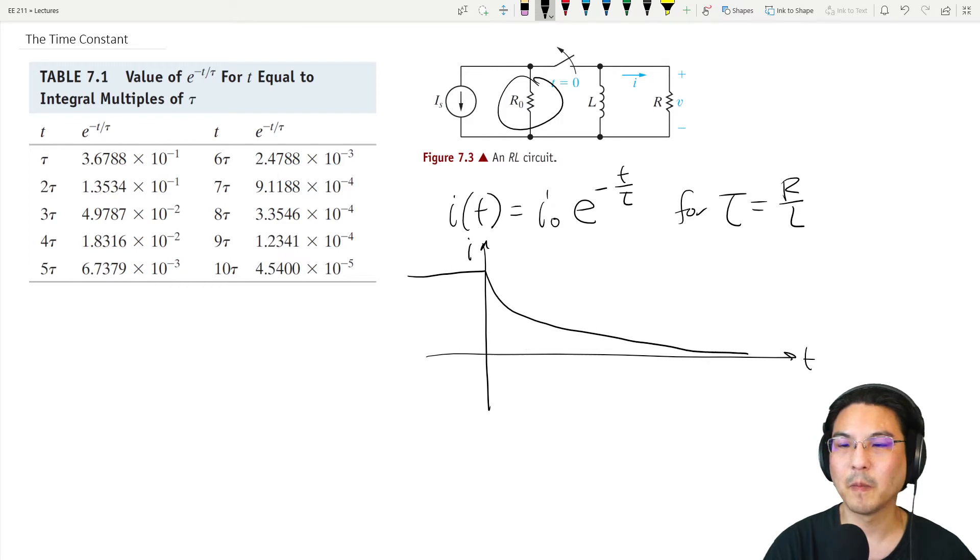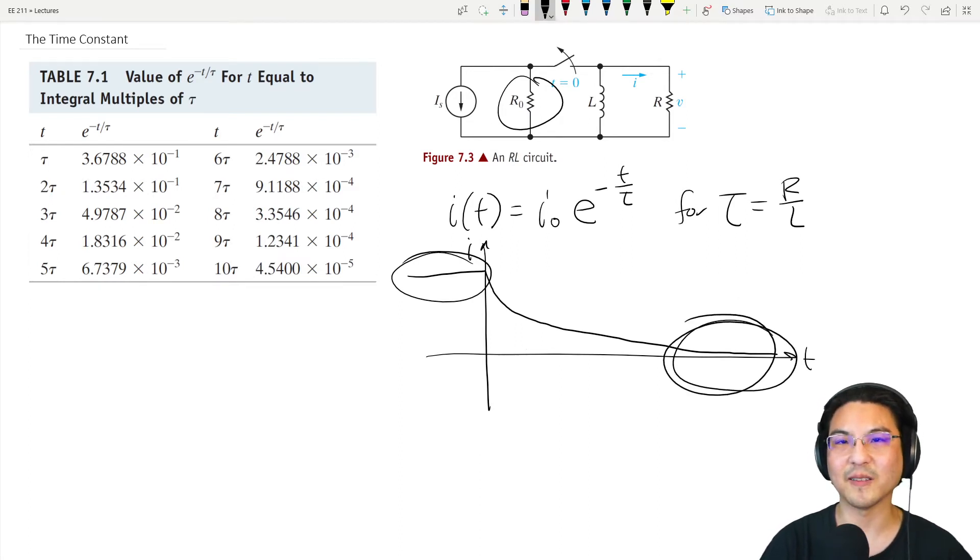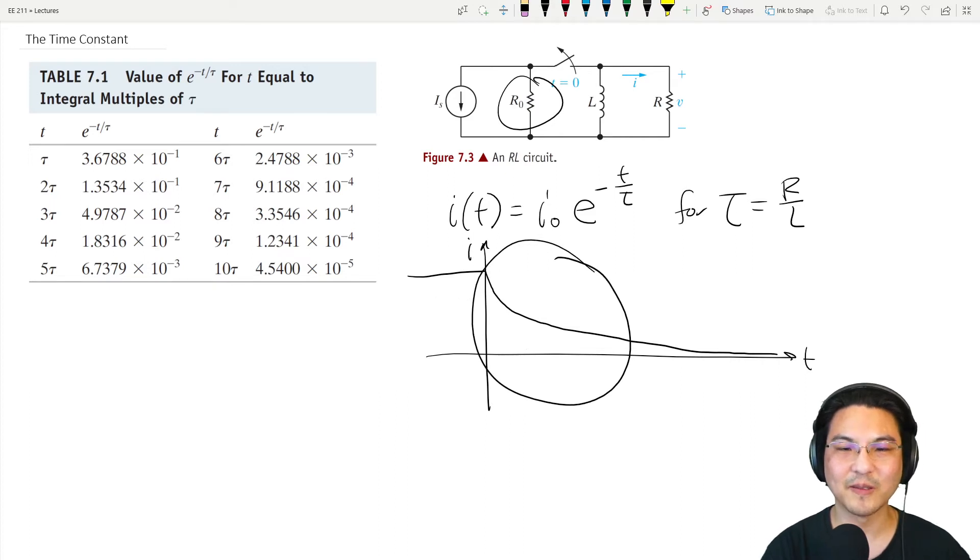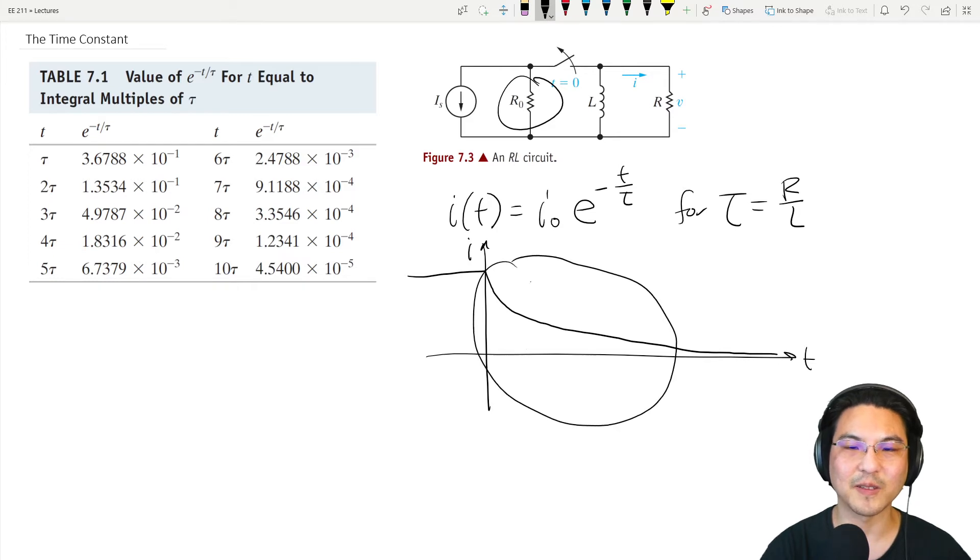The current here is constant, the current later on, let's say over here, is also constant if we wait a long time. The current in between here is changing, so we call this some kind of transient response where it's changing.